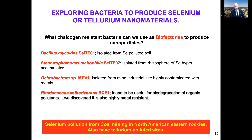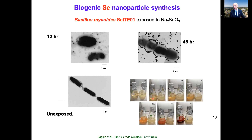That confirmed we should be able to do this with other systems. We wanted to look at chalcogen-resistant bacteria — in Canada and North America we have a selenium pollution problem from coal mining in the eastern Rockies, and we also have many tellurium-polluted sites. So we asked: can we use chalcogen-resistant bacteria as biofactories to make nanoparticles? We isolated bacteria from a variety of polluted sites.